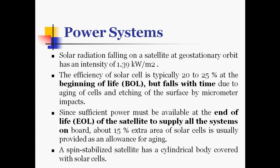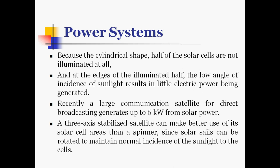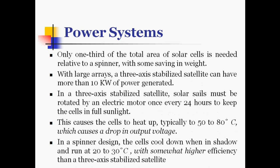Because of the cylindrical shape, half of the solar cells are not illuminated at all times, and at the edges of the illuminated half, the low angle of incidence of sunlight results in little electric power being generated. Recently, a large communication satellite for direct broadcasting generates up to 6 kW from solar power. A 3-axis stabilized satellite can make better use of its solar cell area than a spinner, since solar cells can be rotated to maintain normal incidence of sunlight. Only one third of the total area of solar cells is needed relative to a spinner satellite, with some savings in weight.